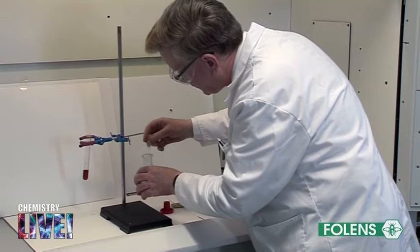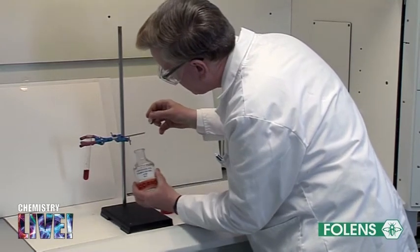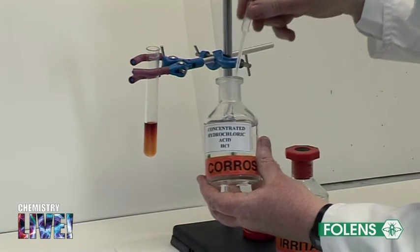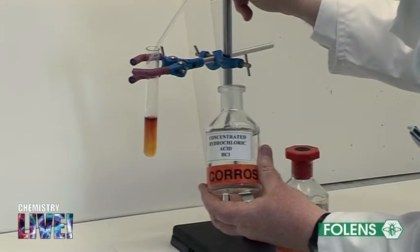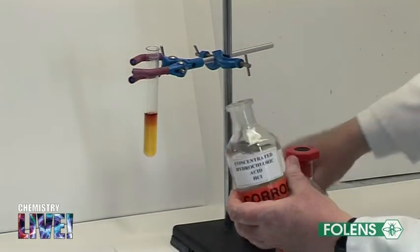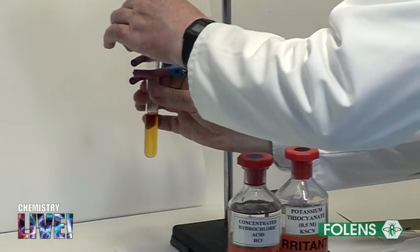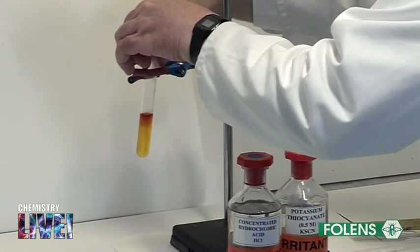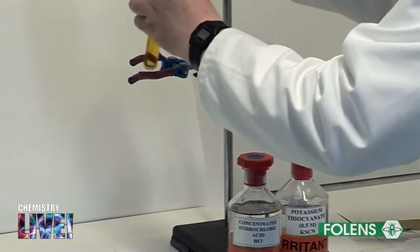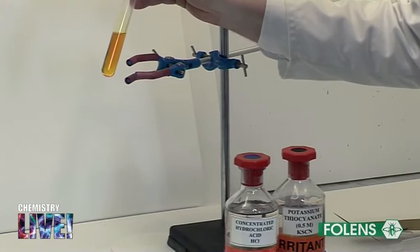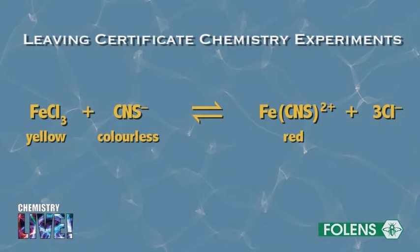In the fume cupboard, add some concentrated hydrochloric acid until a colour change is observed. In keeping with Le Chatelier's principle, the red colour disappears as the equilibrium is shifted to the left hand side of the equation to absorb the Cl- ions added.